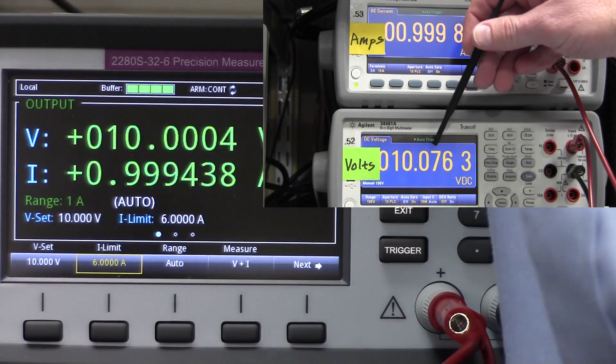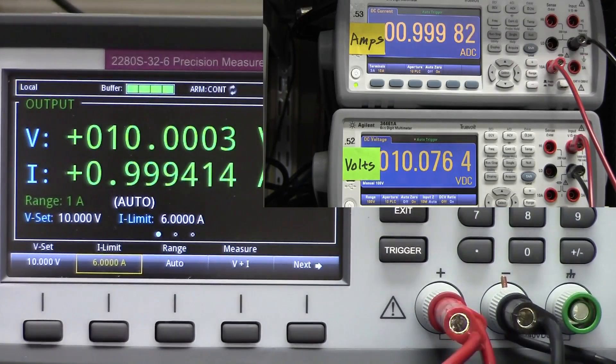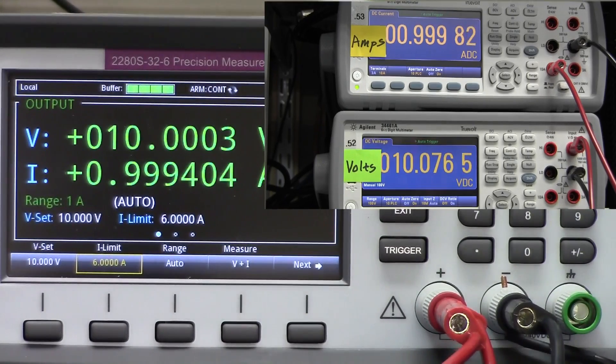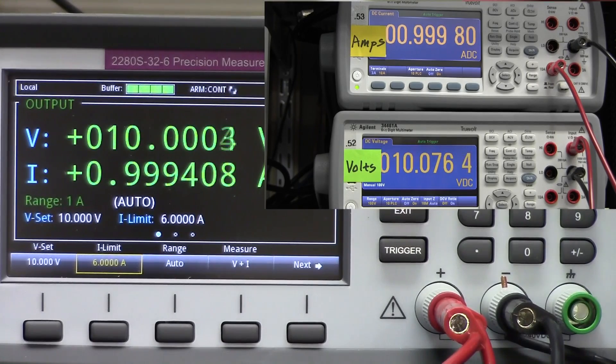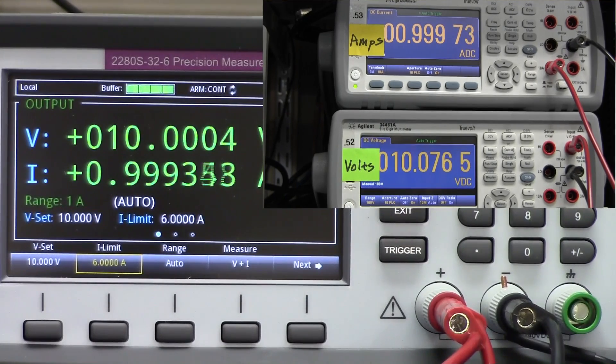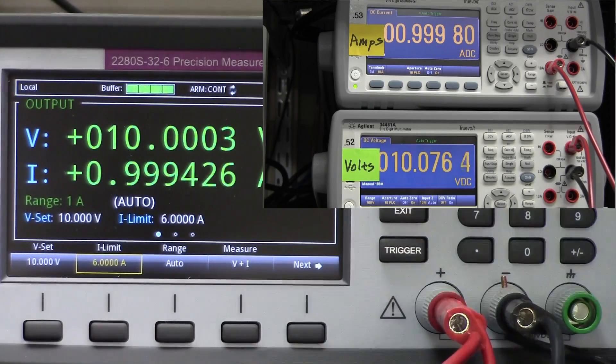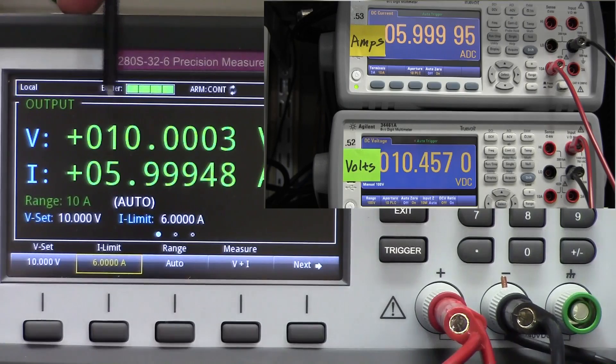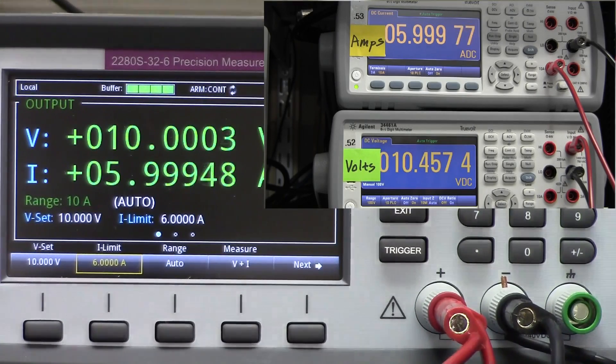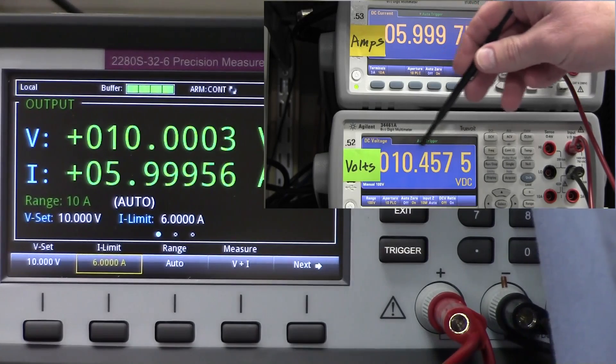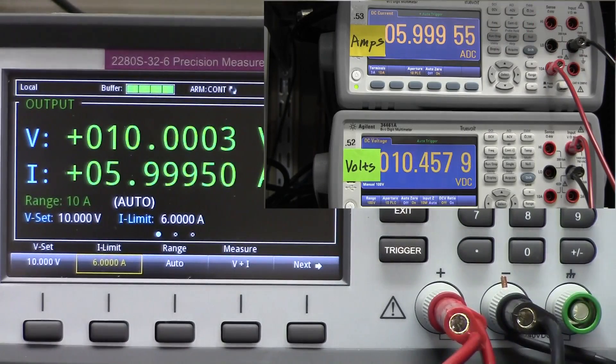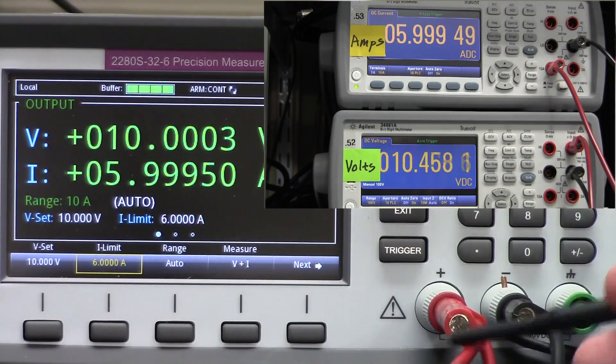If we turn the load back on, but instead let's turn it all the way up to 6 amps, 10.0003, 10.0004, but up here we're reading 10.457. So we're reading an increase of nearly half a volt. So in order to make up for the losses in these wires here, the power supply is pumping out an extra half volt.